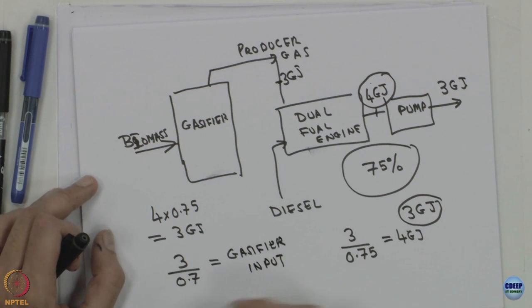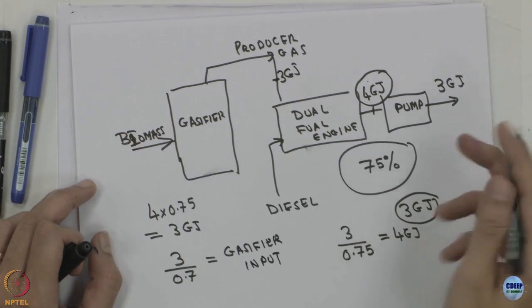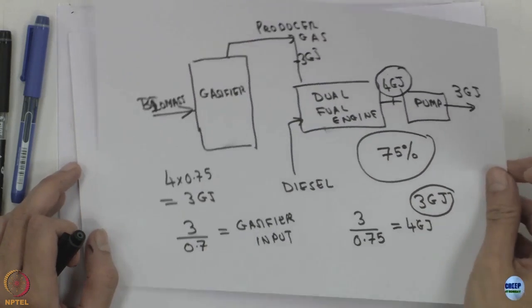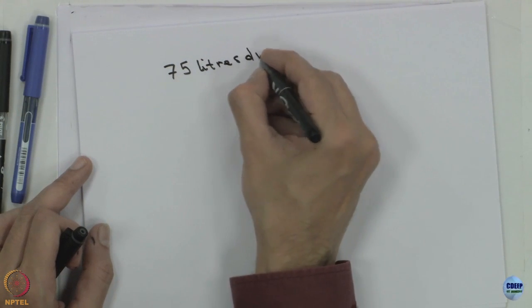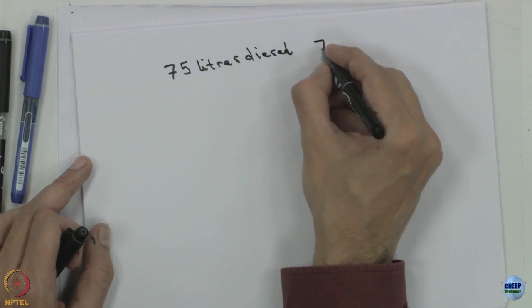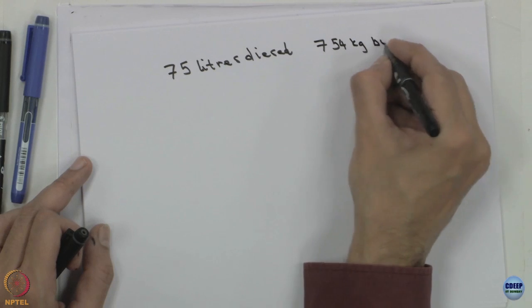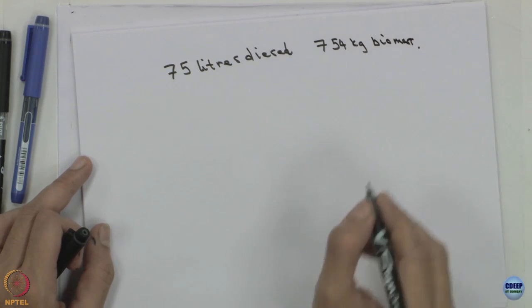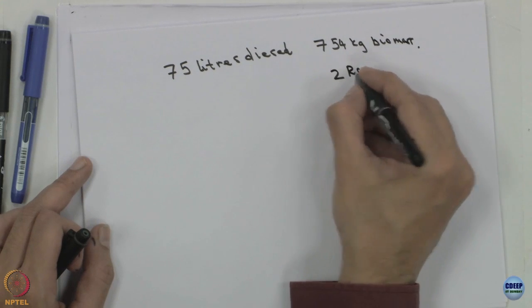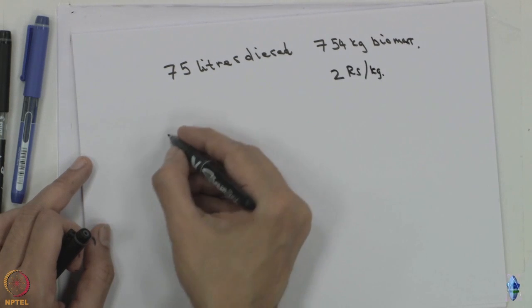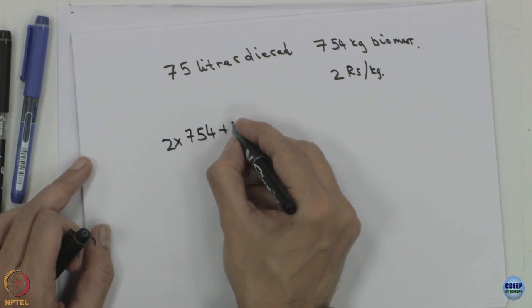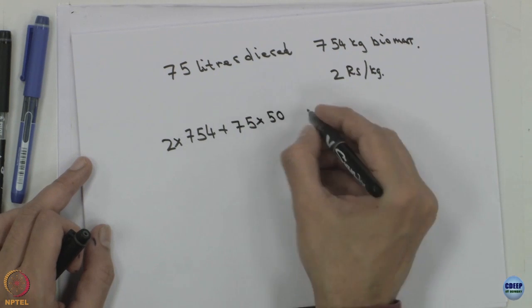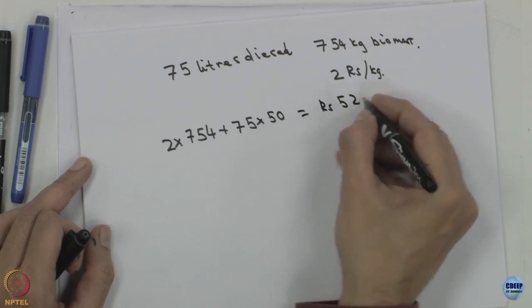We divide by the calorific value of the biomass to get the required biomass quantity. In this case, we end up with 75 litres of diesel — compared to 290 litres earlier — and 754 kg of biomass. If the biomass price is 2 rupees per kg, the total operating cost is (2 × 754) + (75 × 50), which comes to about 5,258 rupees.